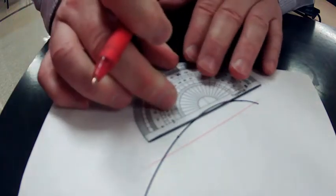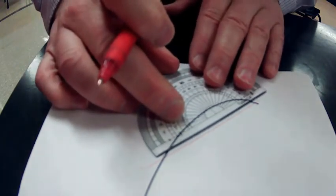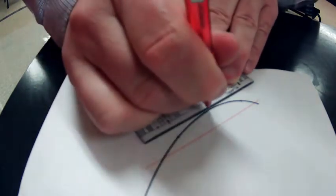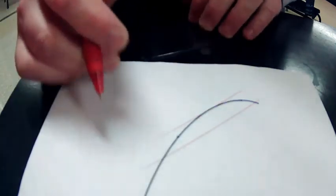A tangent line will only touch in one place. So if I could pull that line down to a spot where it only touches in one place, that is a tangent line right here.